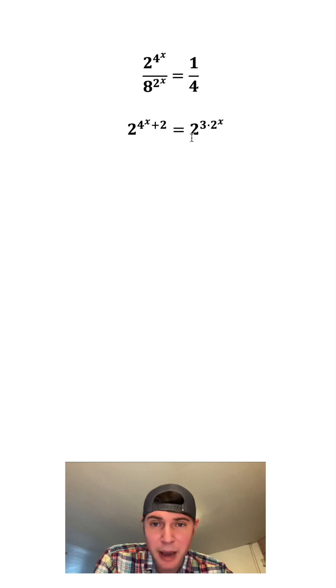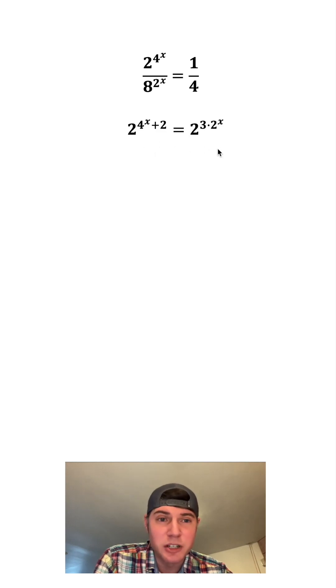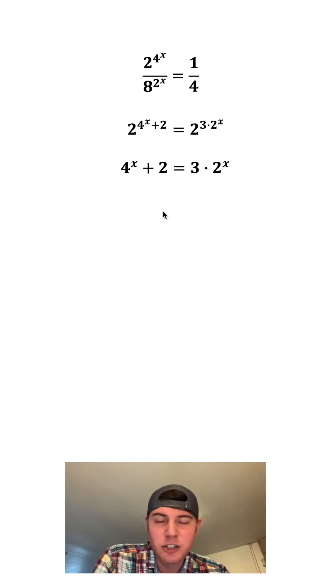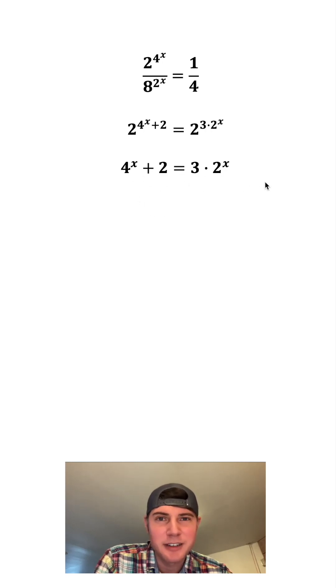And now the bases match, so the only way these two sides of the equation can be equal to each other is if the exponents are equal to each other. Now we have 4 to the x plus 2 equals 3 times 2 to the x.